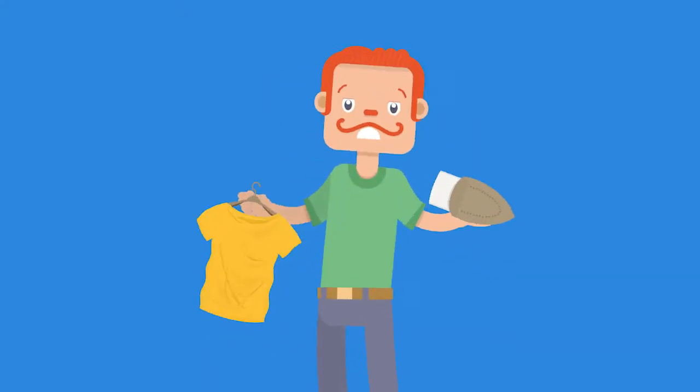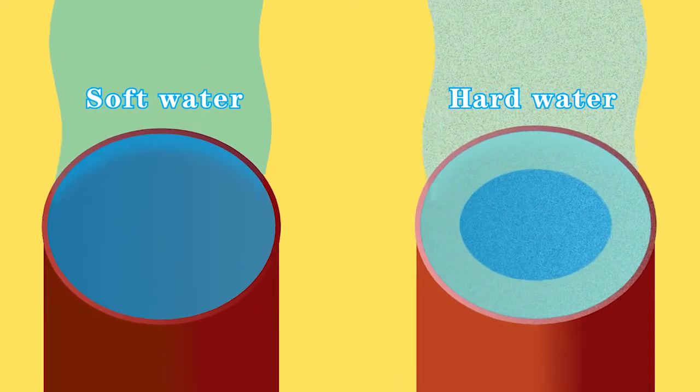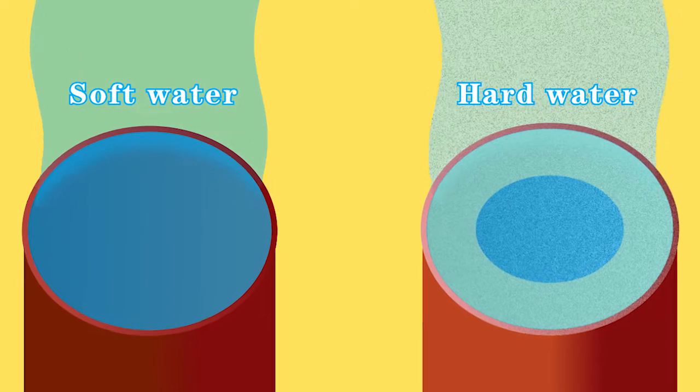Clothes could not be flat and soft at all after washing. The worst problems come from your pipe system. Limescale would form on the inner surface of your pipe, especially the metal pipe.